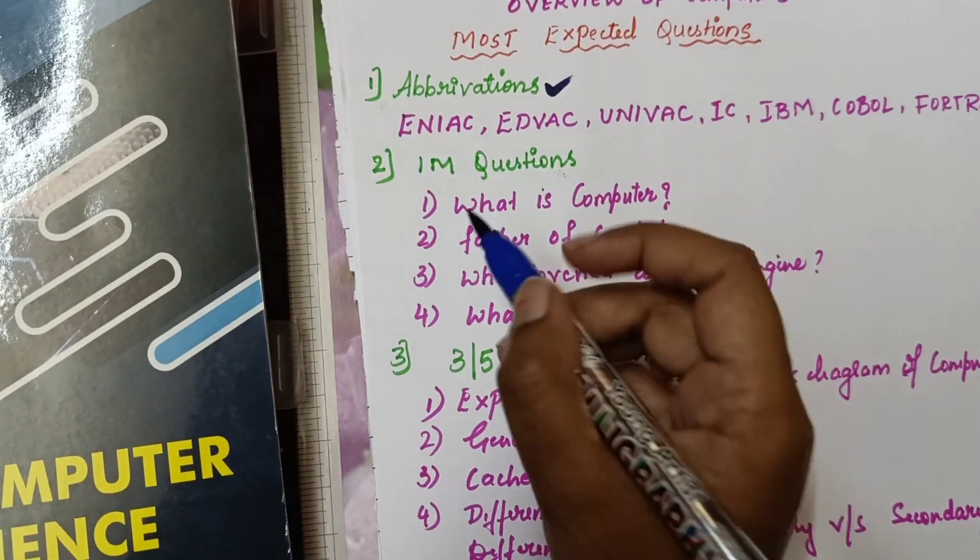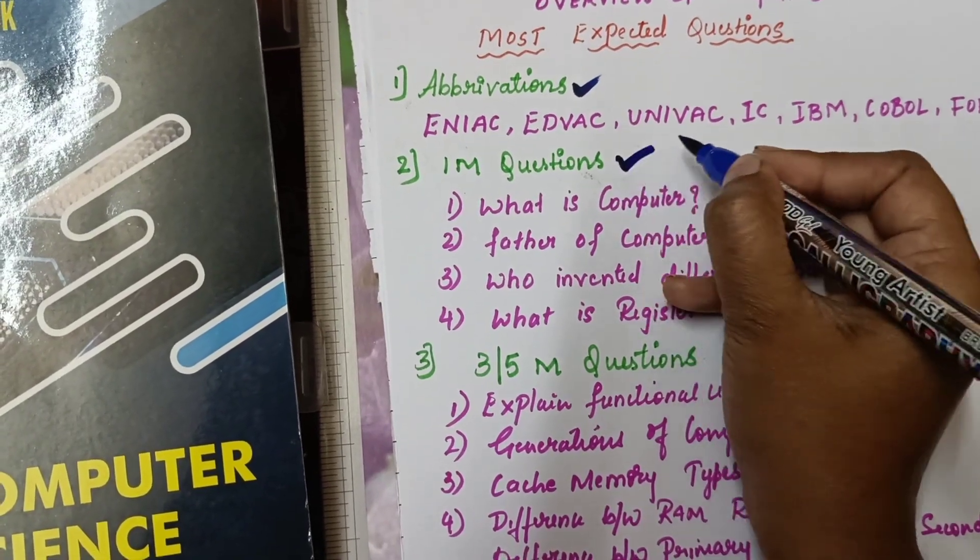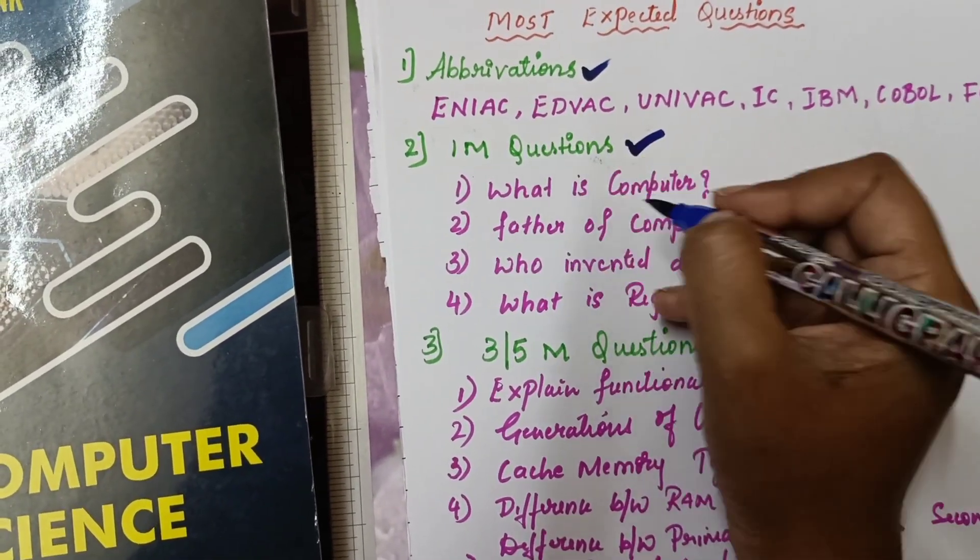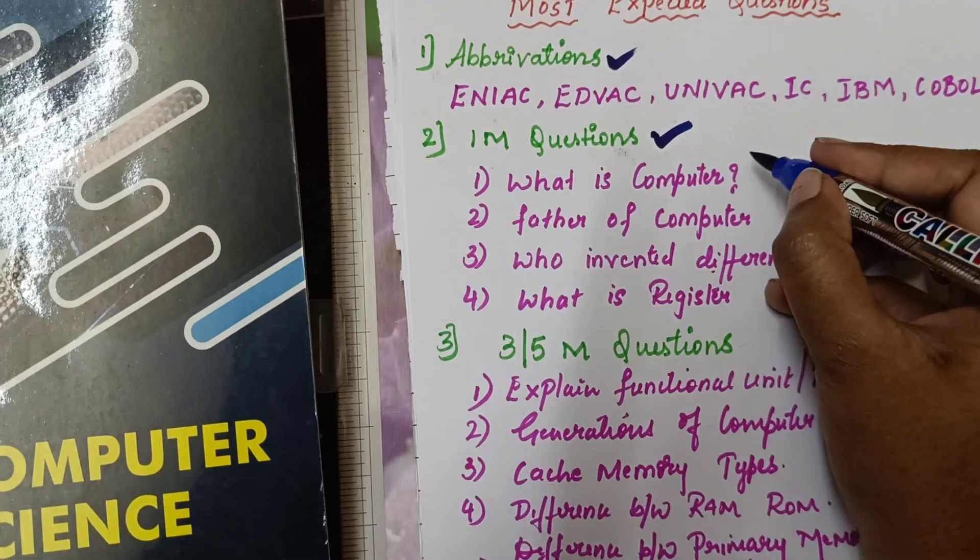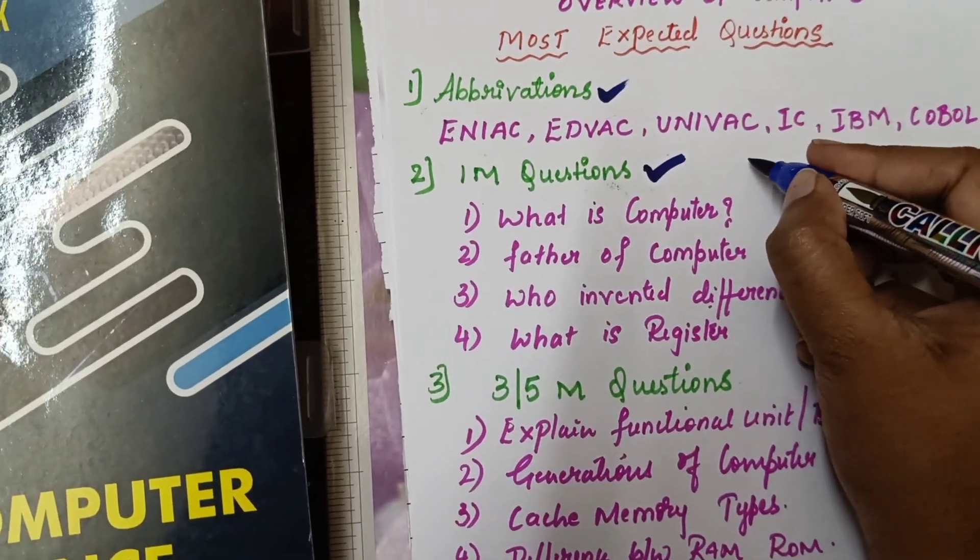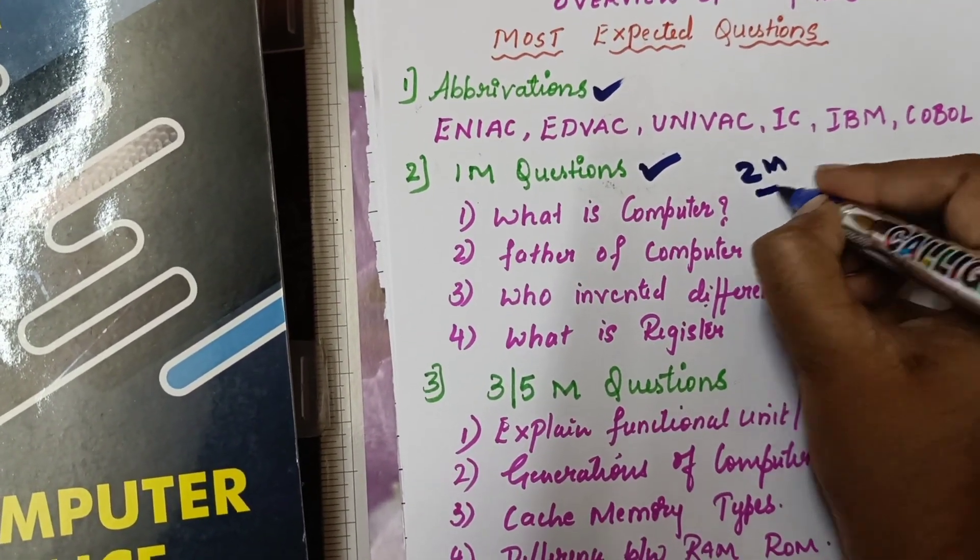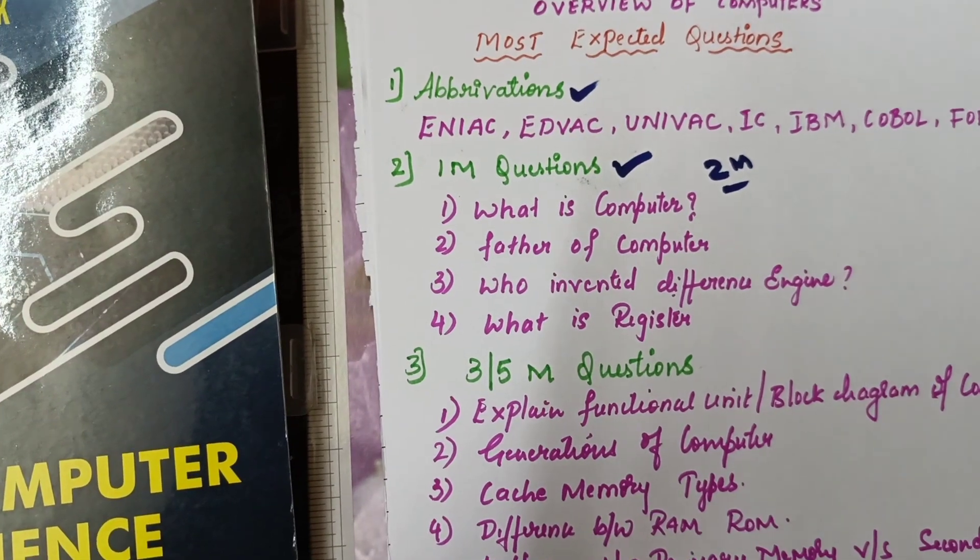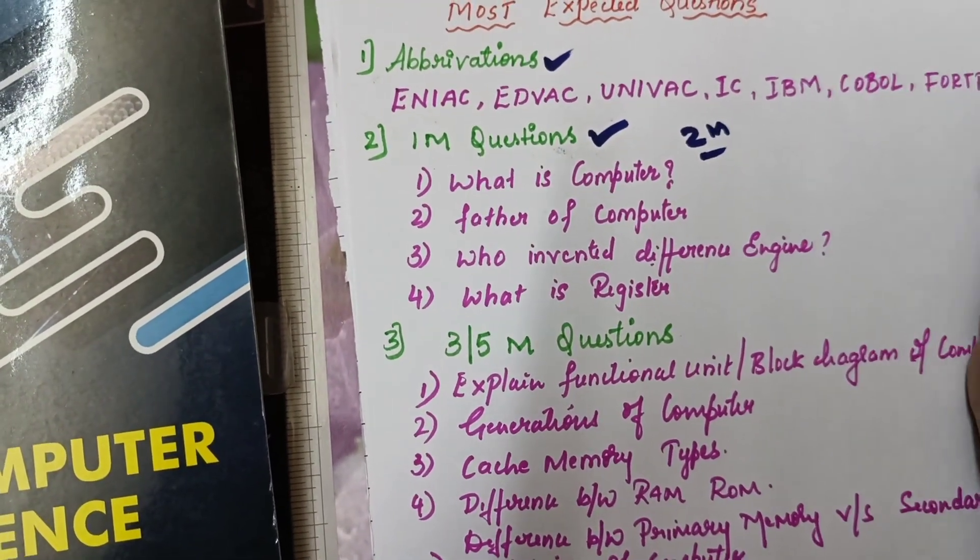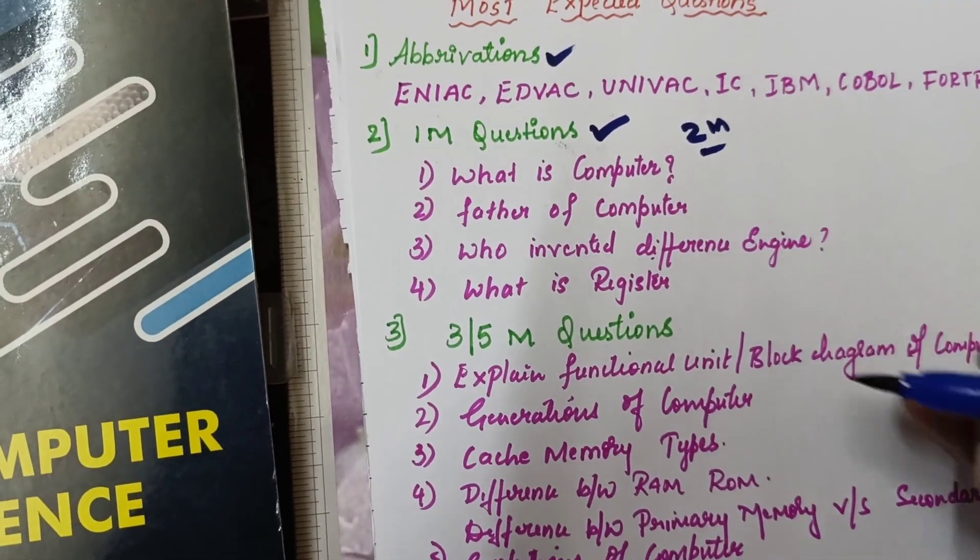Let's come to the second one: one mark questions or two marks questions. Nowadays the pattern has changed - one more question is MCQ, then two mark questions. Examples include: What is computer? Father of computer? Who invented the difference engine? What is a register?